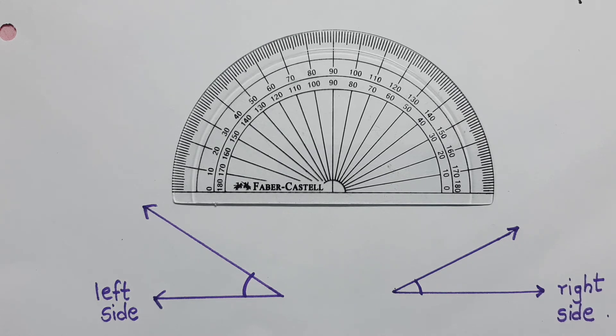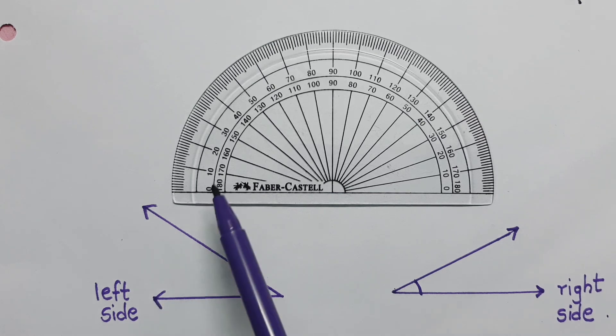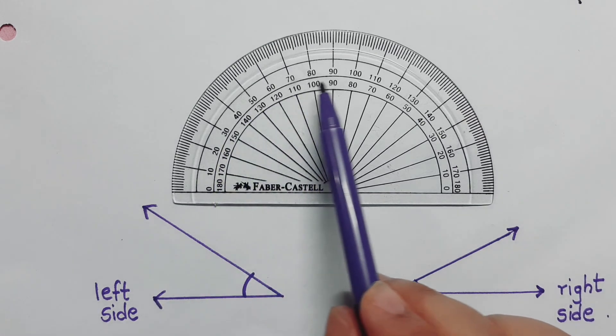You can see that there are two scales for a protractor. So, how to decide which scale to use? When an angle opens on the right hand side, we can use the lower scale. If you can see this angle, this is open on the right hand side. So, for that, you can use the lower scale. And if your angle opens up on the left hand side, you can use the upper scale.